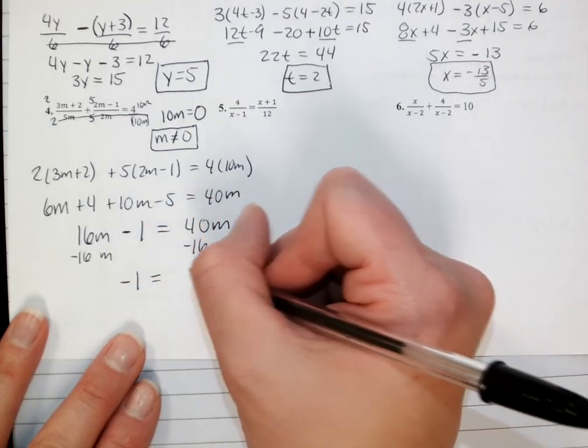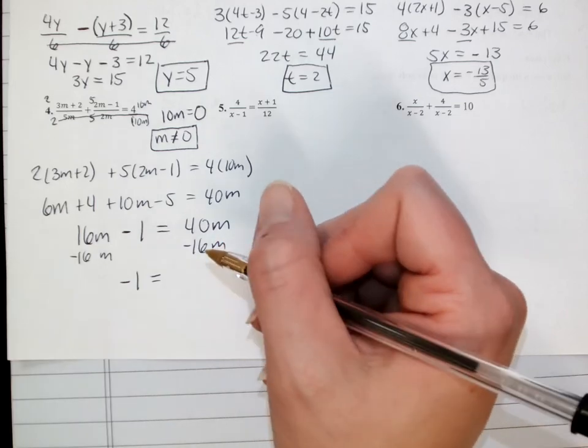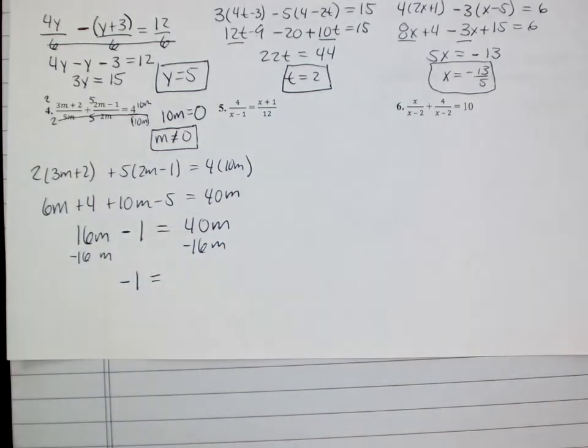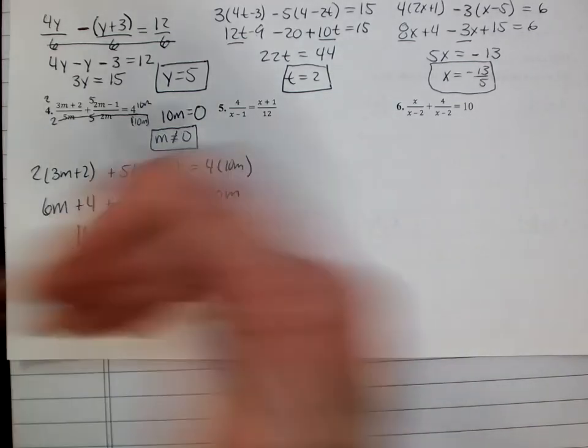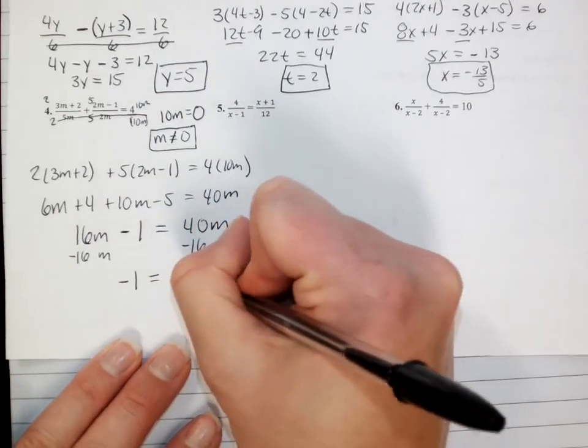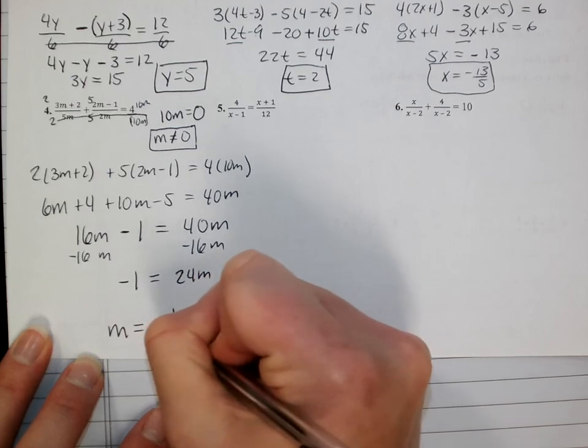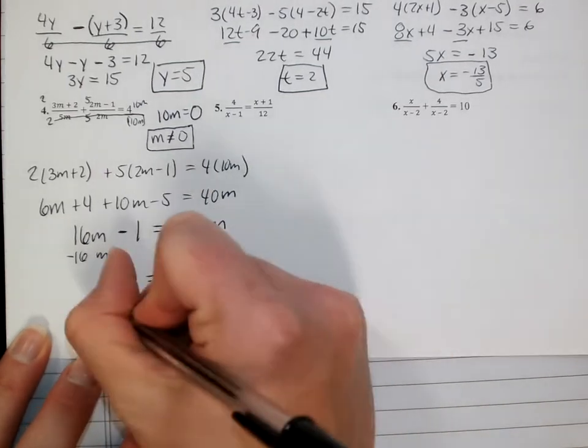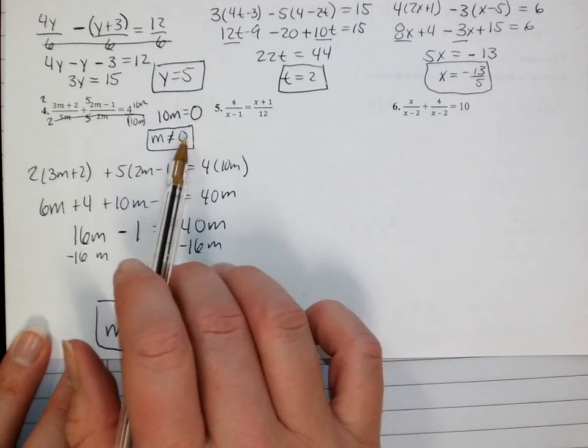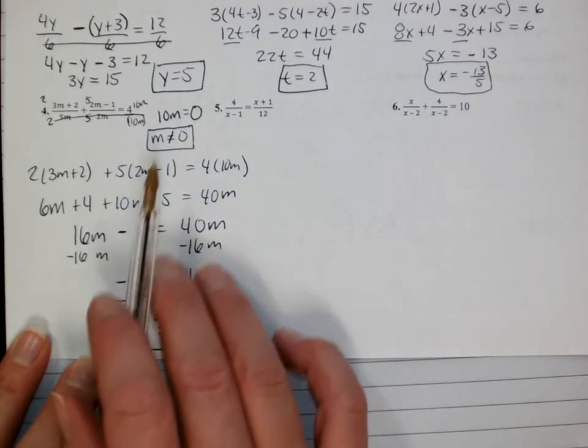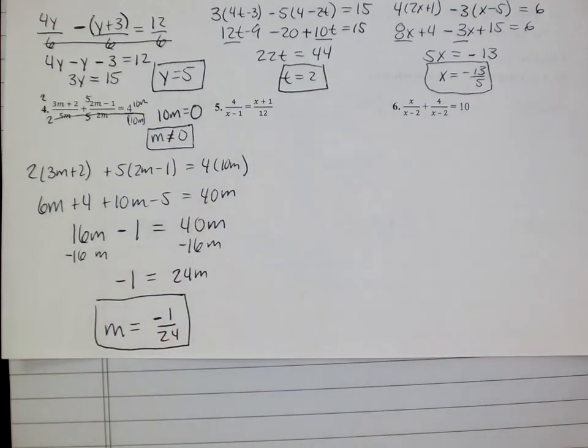40 minus 16 is going to be 24. Wow, it's been a long day already. 24m dividing by 24, that gives me m equals negative 1 over 24. Since this has no relationship to 0, this says m is negative 1 over 24, not 0. I know m can't equal 0, but that's it. That's my answer. It's good to go. You could technically plug it back in and check it if you want to. That sounds annoying, but I'm not going to do it, but you could.